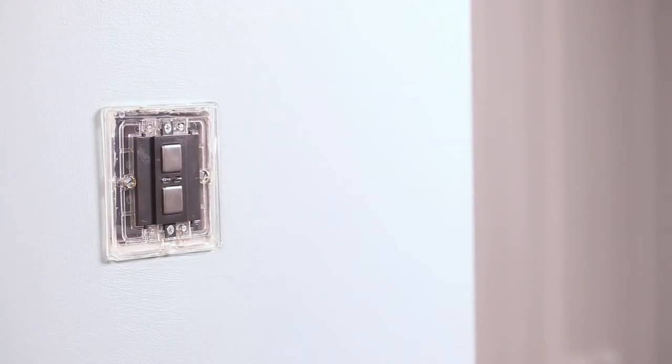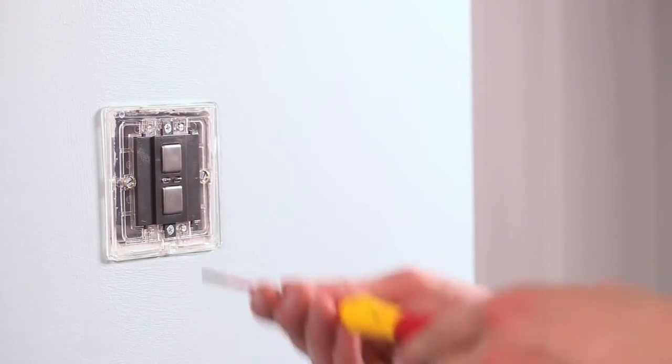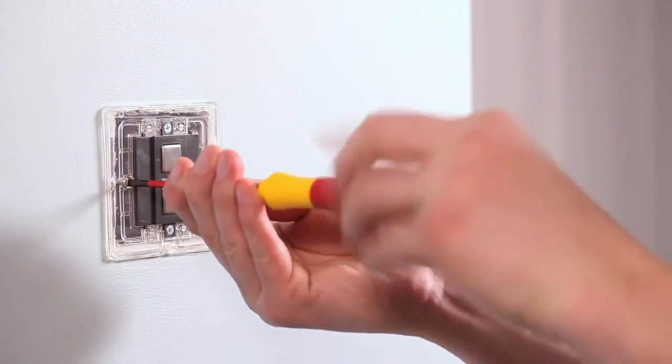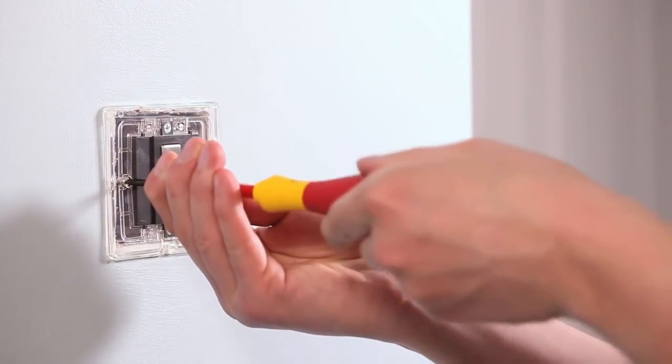Mount the dimmer switch to the back box and ensure that the screws are sufficiently tight to support the product. Don't over tighten, as this may cause the chassis to bend.